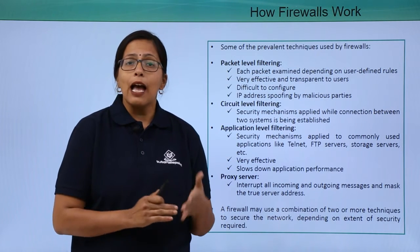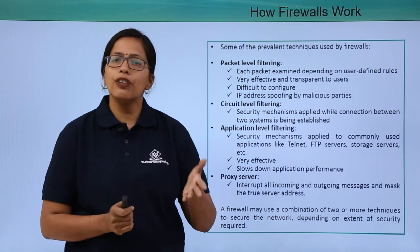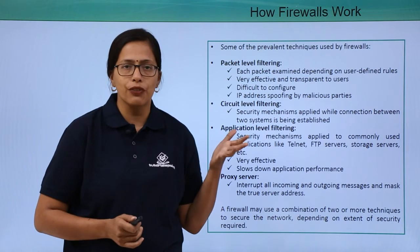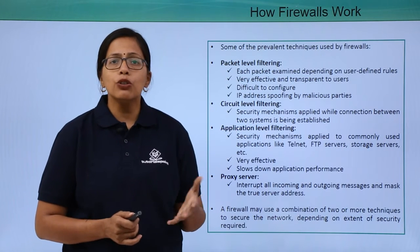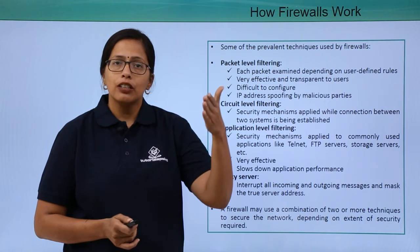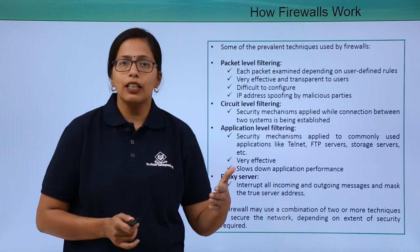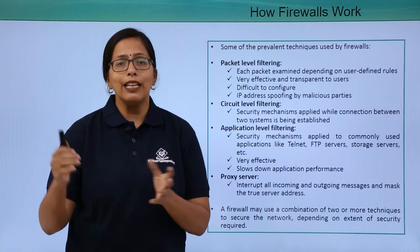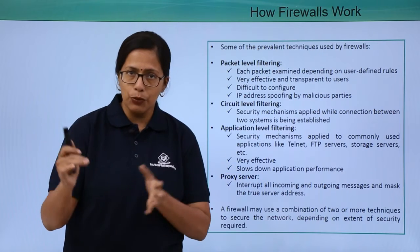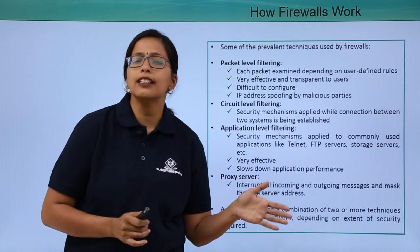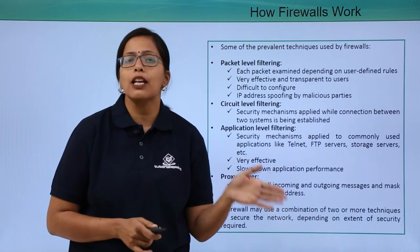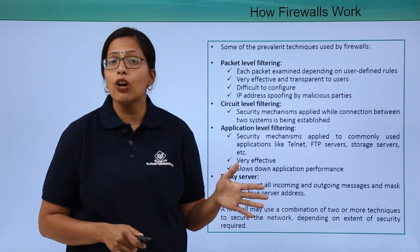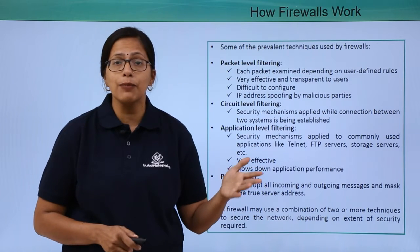Next is application level filtering. In a computer network there are application servers, and those servers have tight security and tight firewalls. Anybody who is accessing any application on that network has to go through that firewall. It is very secure and improves security significantly, but it makes the application very slow.